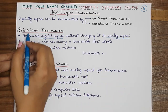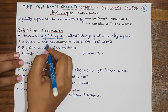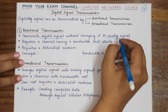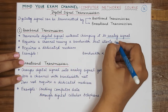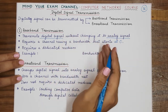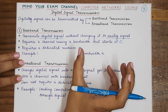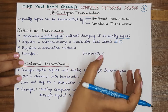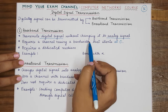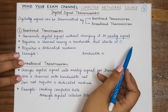A baseband transmission requires a channel that has a bandwidth which starts at zero. The range of frequencies is known as the bandwidth, and the channel needed for baseband transmission should have a bandwidth that starts at zero.